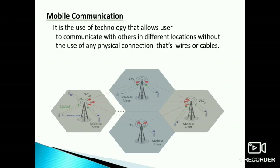Mobile communication is the use of technology that allows users to communicate with others in different locations without the use of physical connections — that is, wires or cables. This is a typical diagram showing many base stations transmitting and receiving signals to mobile users.